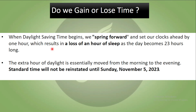Do we really gain or lose time? When Daylight Saving Time begins, we spring forward and set our clocks ahead by one hour. This results in a loss of one hour of sleep, and the day becomes 23 hours. The extra hour of daylight is moved from the morning to the evening. The standard time will not be reinstated until Sunday, November 5, 2023.